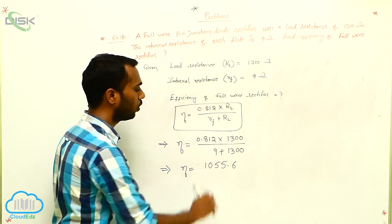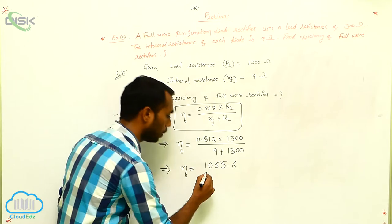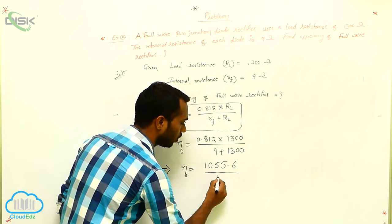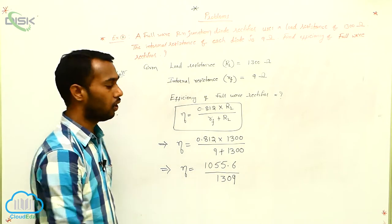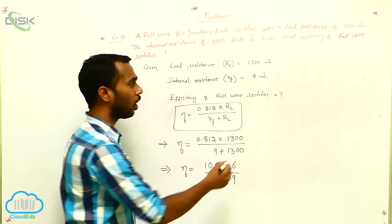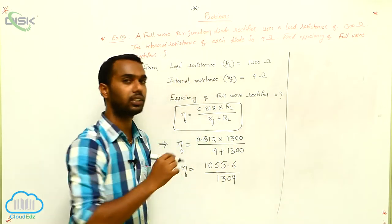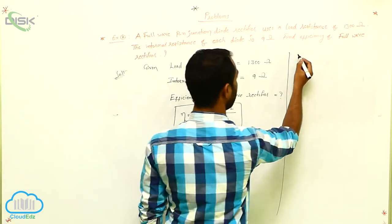You multiply that, you get this value 1055.6 by, you add this one, that is 1309. We have to cut. If you cut, how much? We have to get.